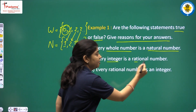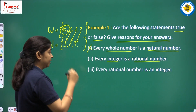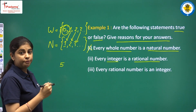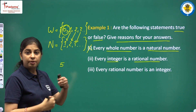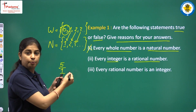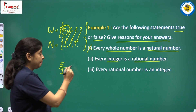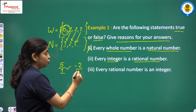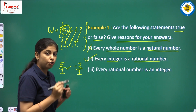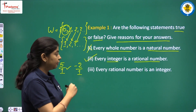Second statement: Every integer is a rational number. Take any integer, say 5. We can write it as 5/1, which is in P/Q form, so yes it is a rational number. Another example: minus 2 can be written as minus 2 upon 1. So the second statement is true — every integer is a rational number.